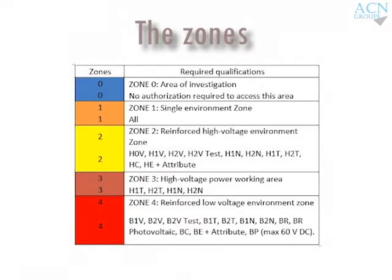The zones and required qualifications: Zone 0 is an area of investigation — no authorization required to access this area. Zone 1 is a single environment zone. Zone 2 is a reinforced high voltage environment zone, covering H0V, H1V, H2V, H1N, H2N, H1T, H2T, HC, and HE-plus attribute. Zone 3 is a high voltage power working area (H1T, H2T, H1N, H2N). Zone 4 is a reinforced low voltage environment zone.